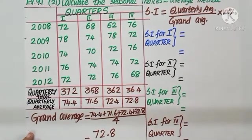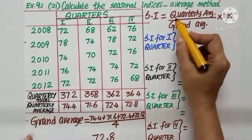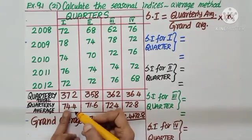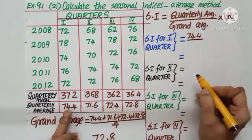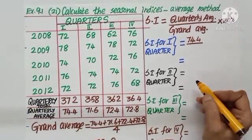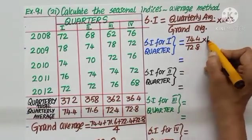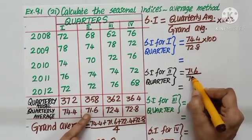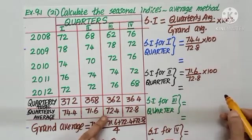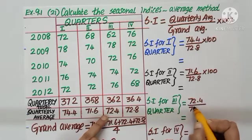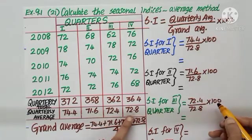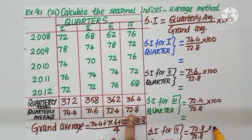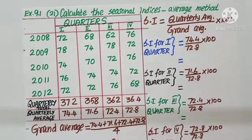Now, what is the seasonal index? It is quarterly average by grand average into 100. Quarterly average, first quarter, 74.4 by grand average, 72.8 into 100. Simplify and write the answer. Second quarter, 71.6 by 72.8 into 100. Third one, 72.4 by 72.8 into 100. Fourth one, 72.8 by 72.8 into 100. Calculate each value.